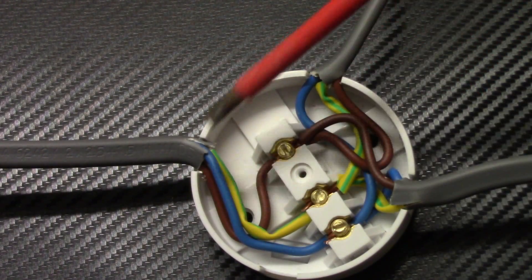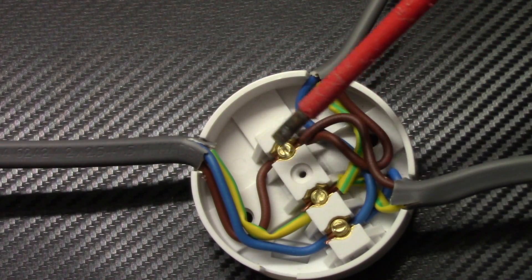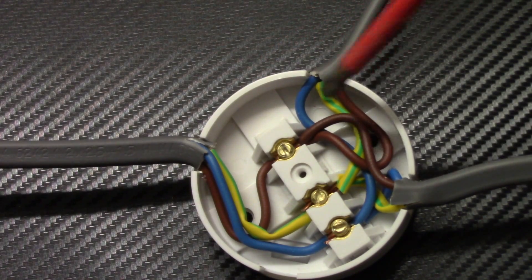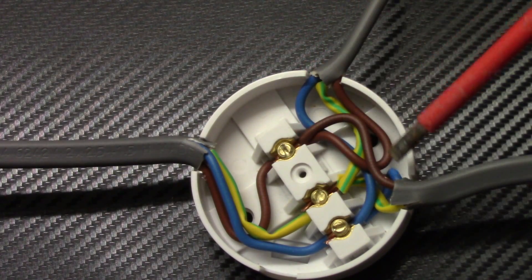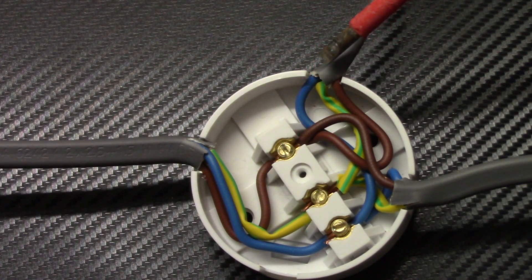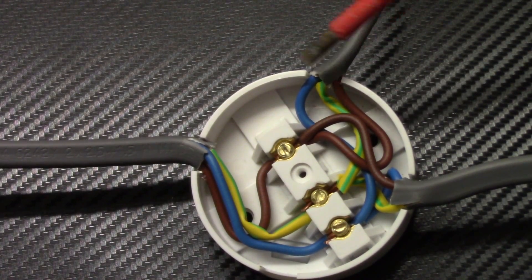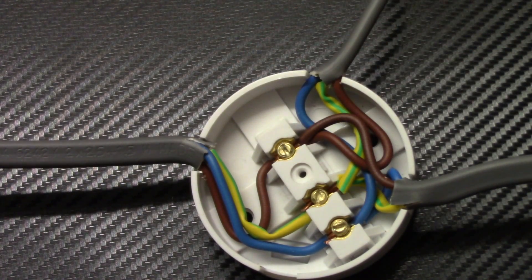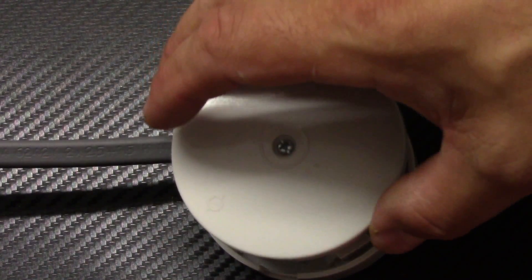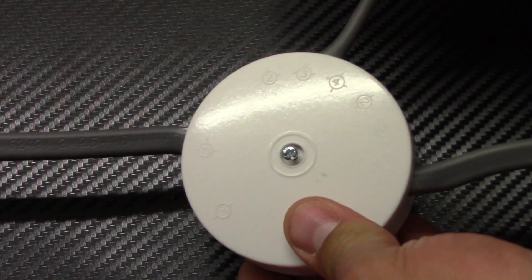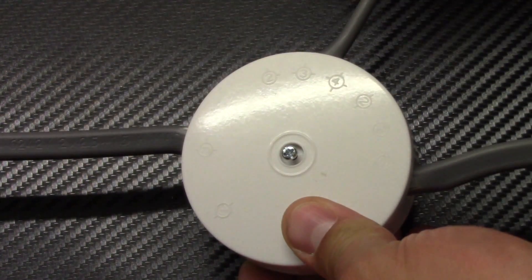When you make the junction box and connect all the wires, just tighten it really good. Also remember, try to keep the insulation inside the junction box, so when you screw it back, no wires are coming out.